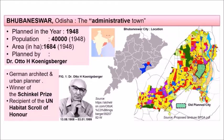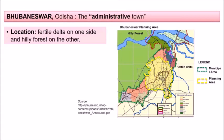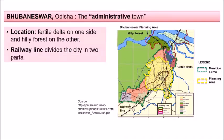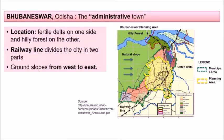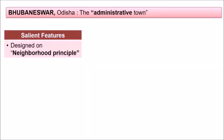The location of Bhubaneswar features forests on one side, rivers on another, with land sloping from west to east. The site was on a fertile delta on one side and hilly forest on another. The railway line divided the city into two parts, and the ground sloped from west to east.